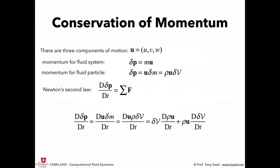We are dealing with three components of momentum or velocity. We call that the velocity vector U in bold, which consists of U, V, and W — U in the x direction, V in the y direction, and W in the z direction. Momentum for a fluid system is the integral of U delta M — so P equals the integral of U delta M. The momentum for a fluid particle is delta P, which is a vector equal to U delta M. And since mass is rho delta V, the momentum for a fluid particle is rho U delta V.